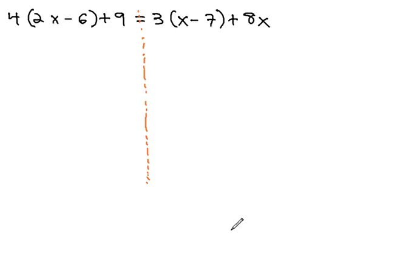On the left side of this equation, we notice this 4 in front of parentheses. We can distribute the 4 through parentheses to get 8x minus 24 plus 9. On the right side, there's also some simplifying we can do. We can distribute the 3 through the parentheses to get 3x minus 21 plus 8x.